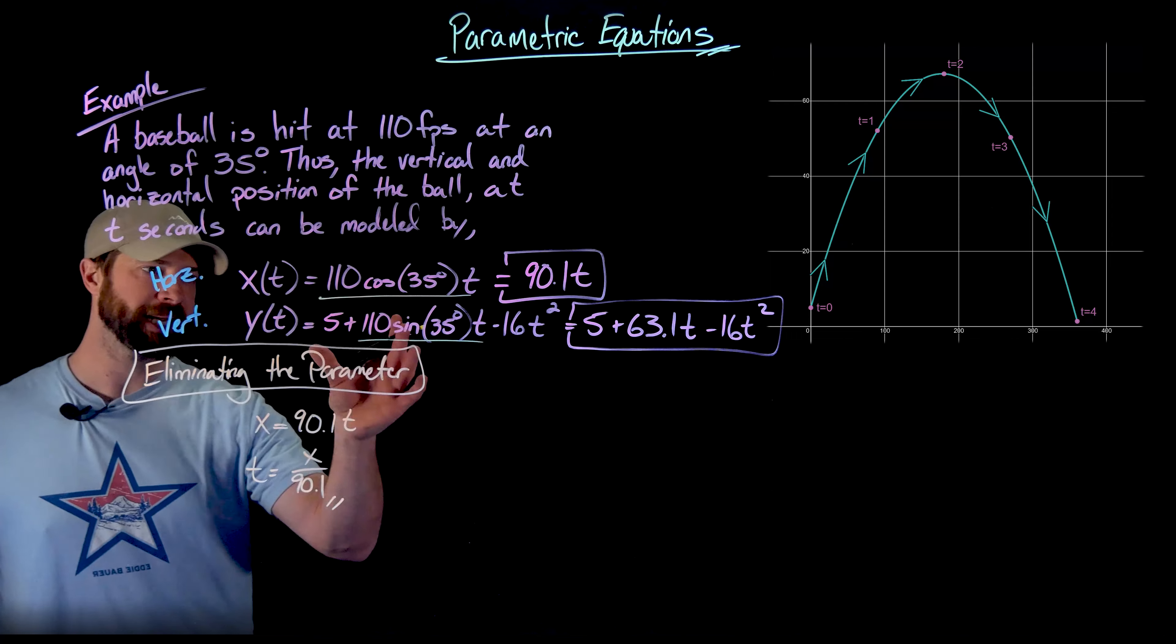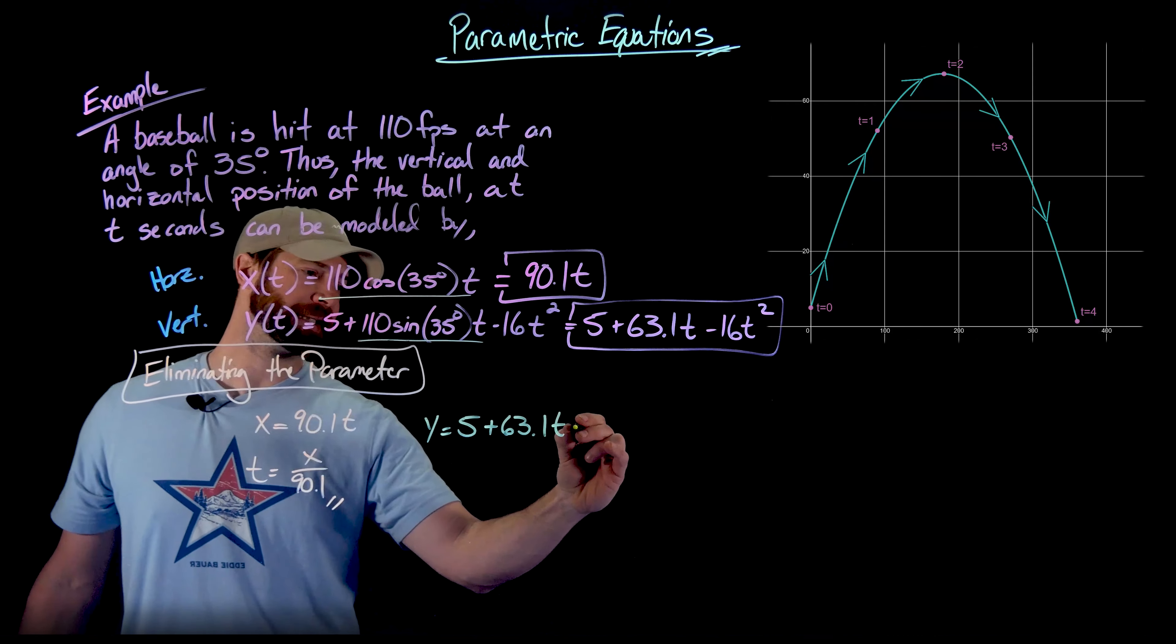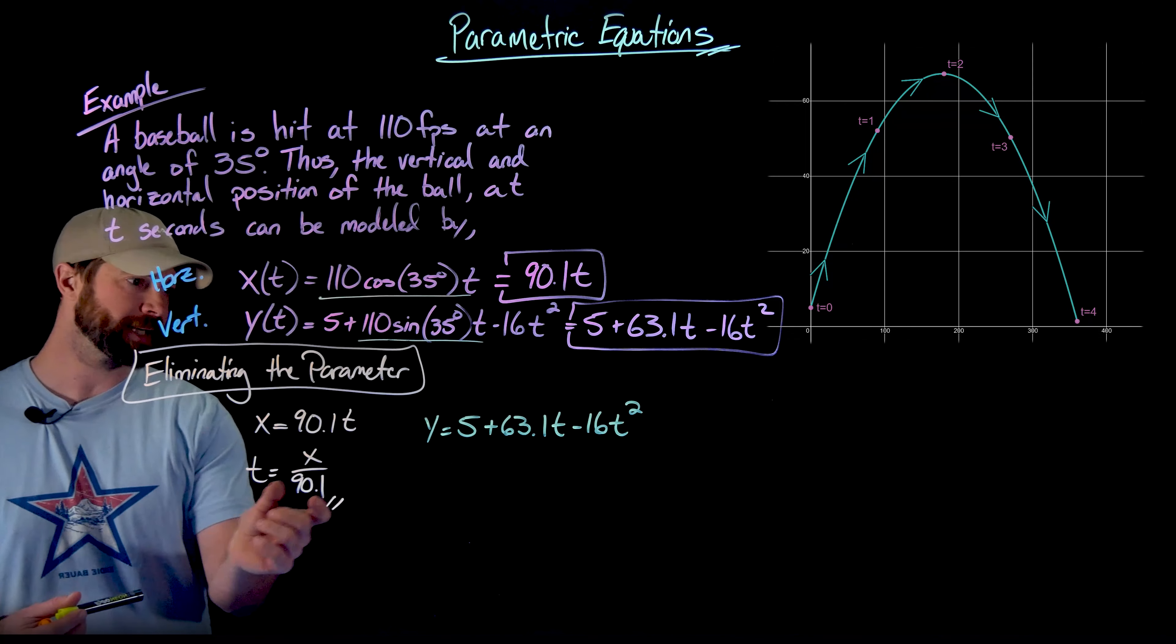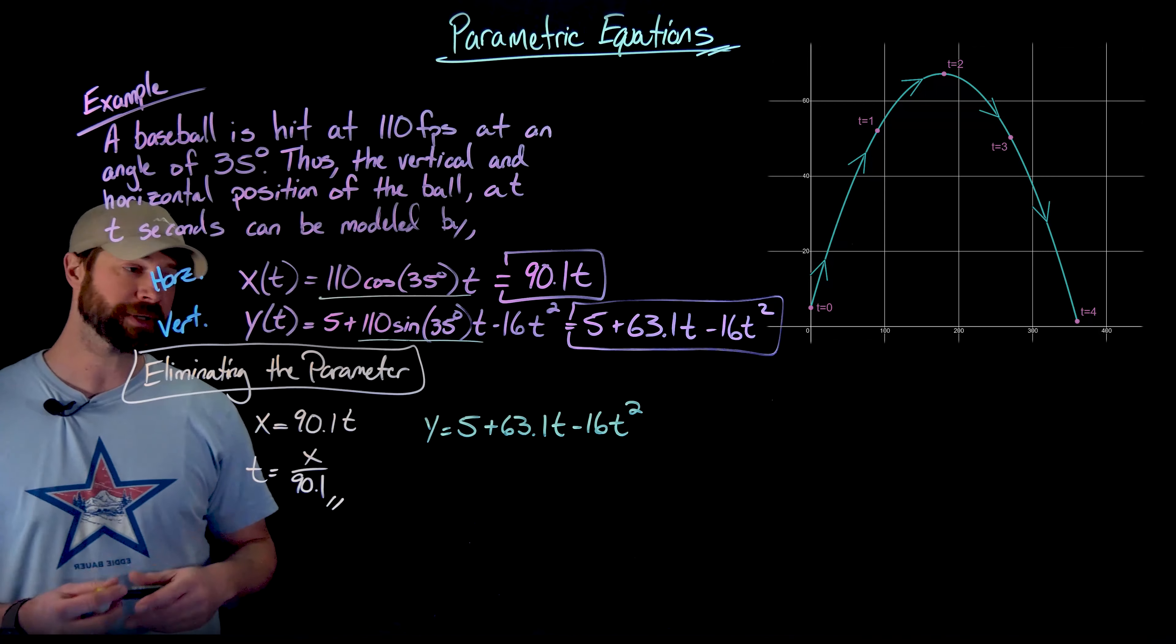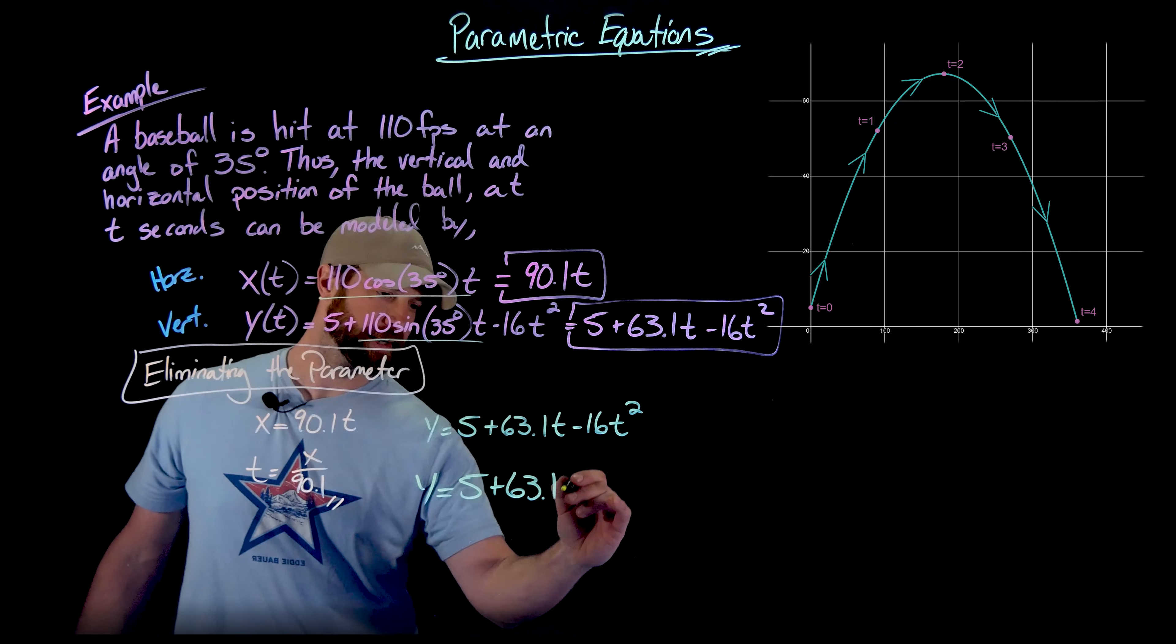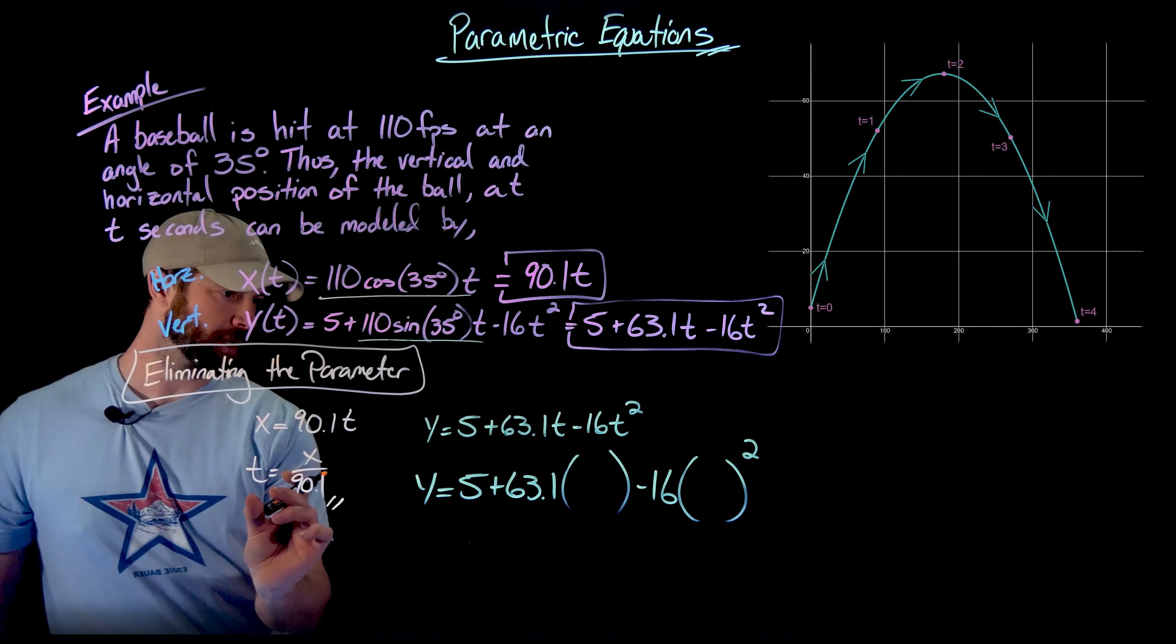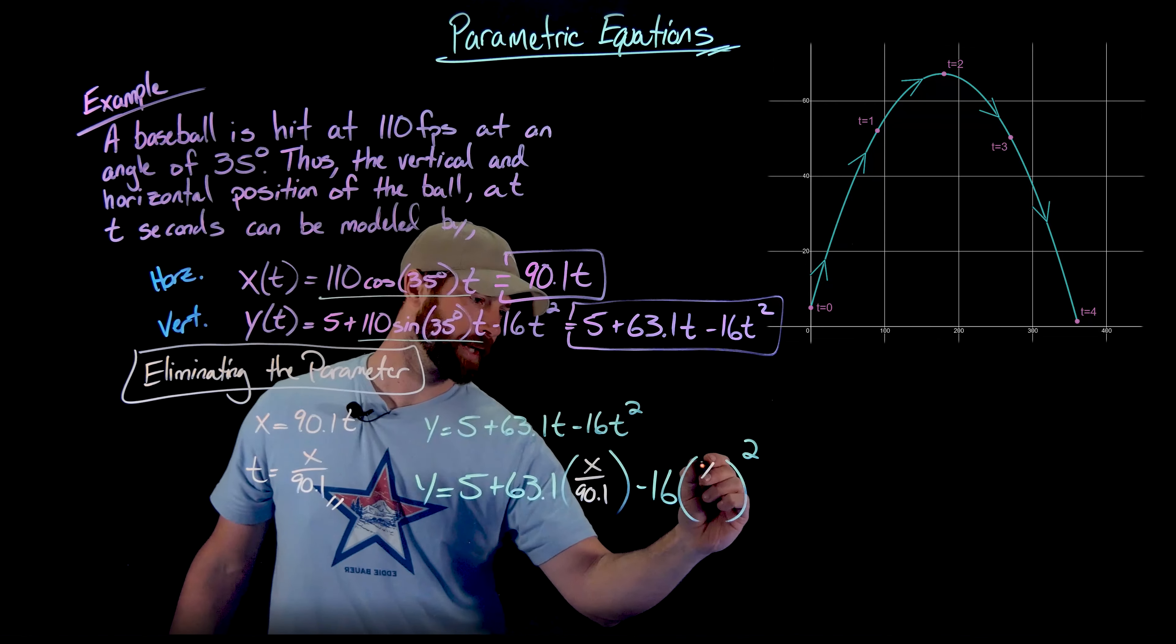Then what I'm going to do is take this second equation right here, which is y equals 5 plus 63.1t minus 16t squared. And what I'm going to do is substitute this expression in for t. And what you'll see is that when I replace t with x over 90.1 here and here, it's going to make this equation of y in terms of x. And so then plugging that in, all I'm going to do is I'm going to rewrite this where I have my t. I'll throw some parentheses in here. So minus 16 and then t squared. And then I'm just going to substitute this equivalent expression to t of x over 90.1 in both of these cases right here.